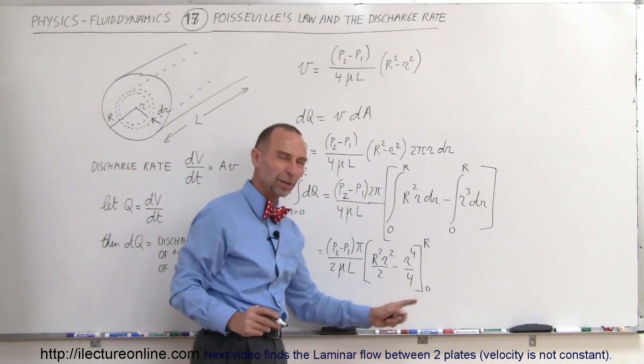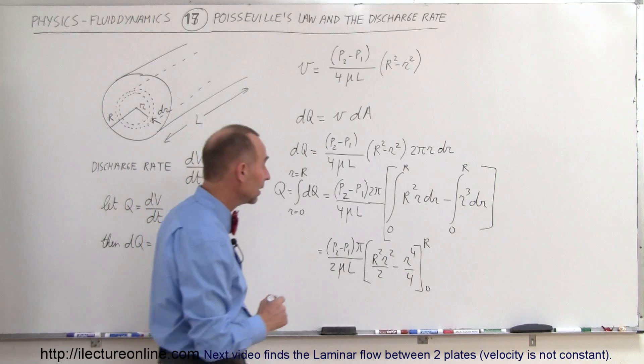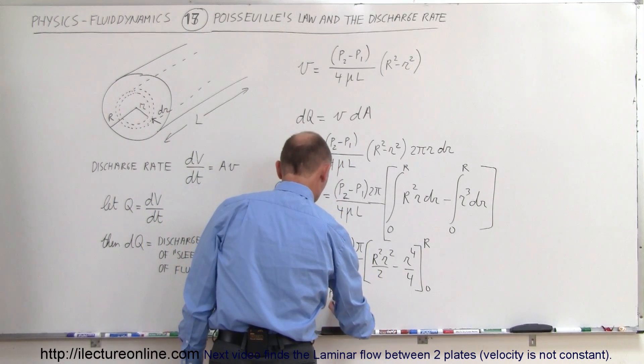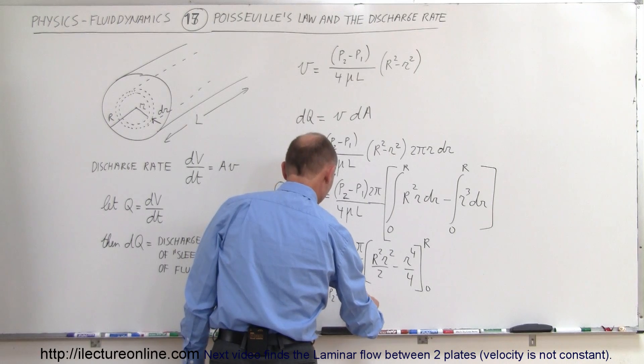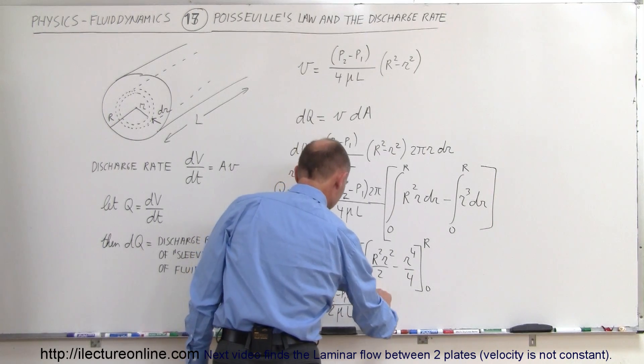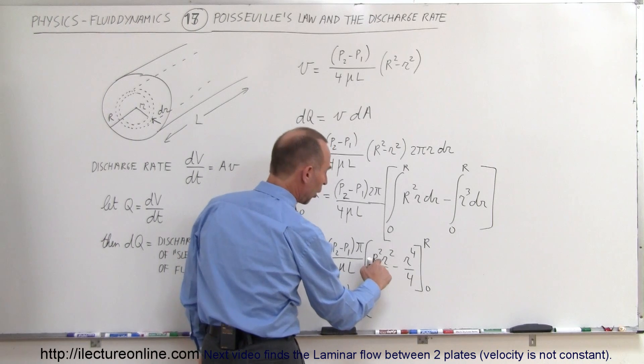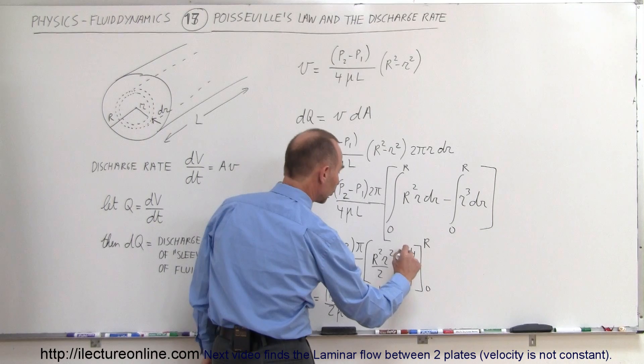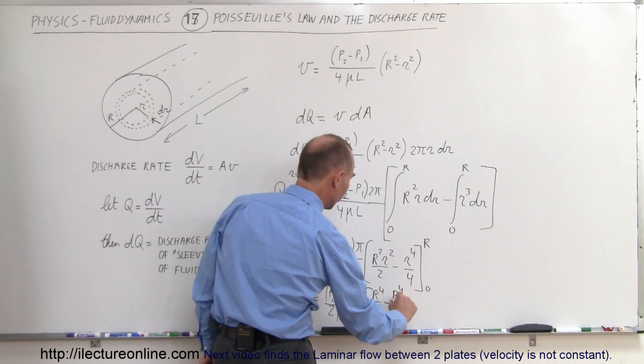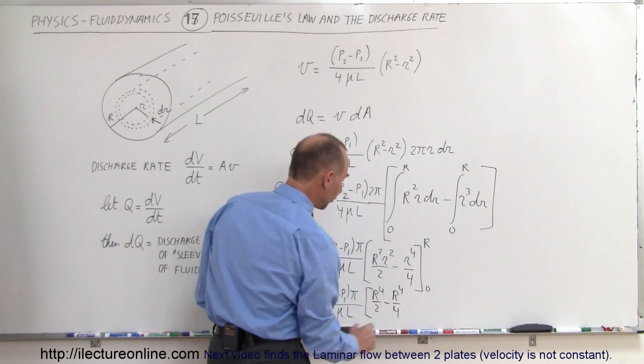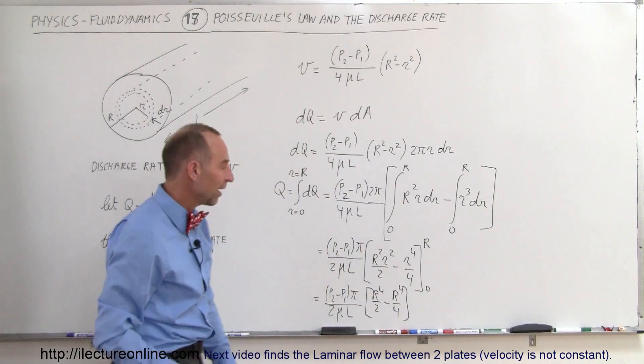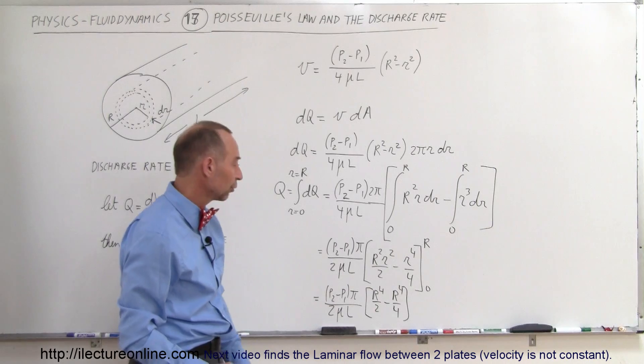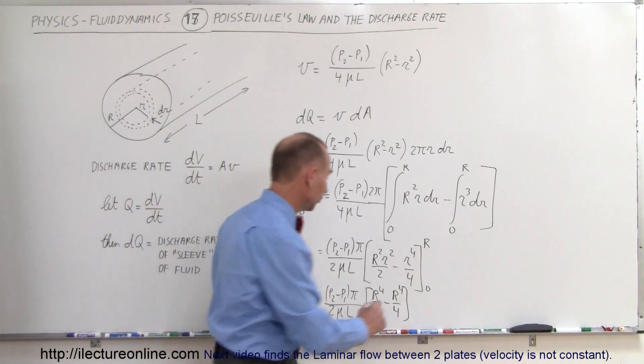Notice when I plug in the lower limit, I get 0. When I plug in the upper limit, I get an interesting result. So this is equal to the difference in the pressure, p2 minus p1, times pi, divided by 2 mu L. And then here, I'll end up with an r to the 4th over 2, minus r to the 4th over 4. And if we then simplify that, this is basically 2 r to the 4th over 4, minus 1 r to the 4th over 4, which is simply a single r to the 4th over 4.